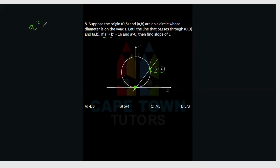That looks like A squared plus B squared equals R squared. So in this case, A and B represent coordinates, and A squared plus B squared gives us 16. This means the radius would be the square root of 16, which is 4.